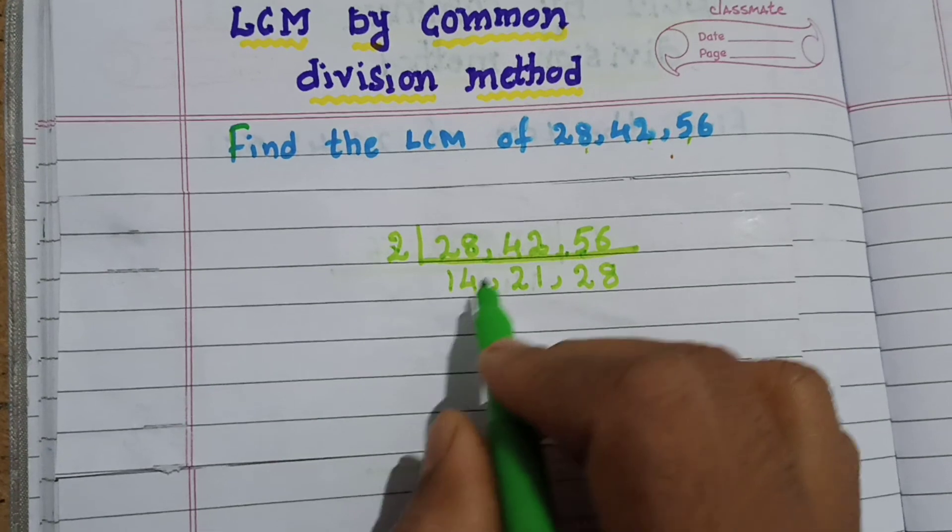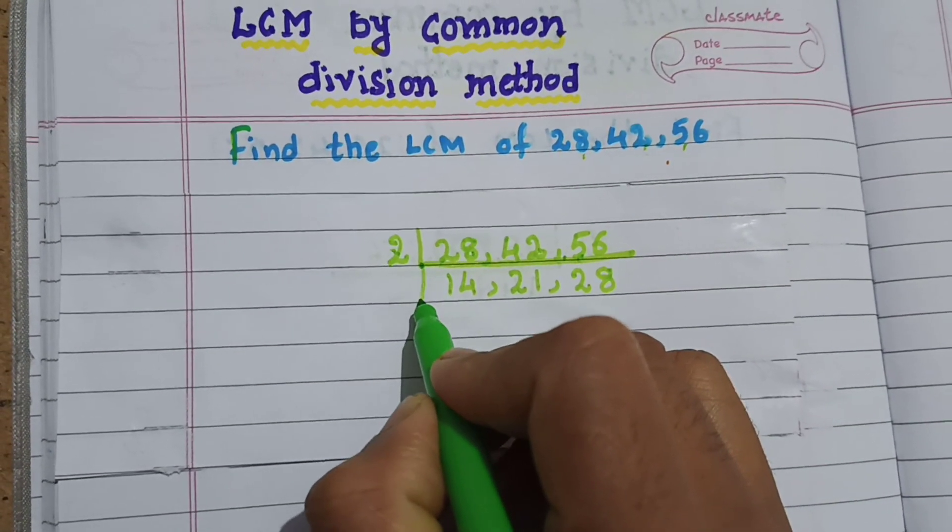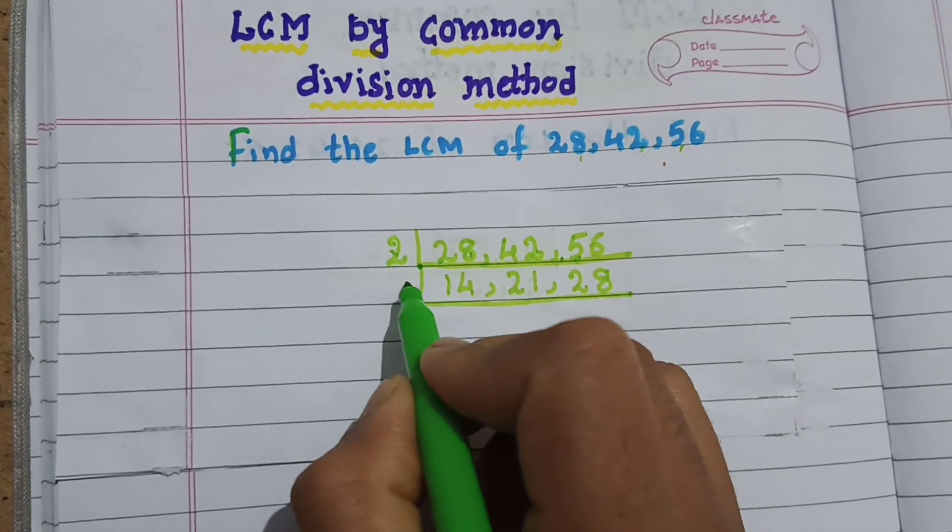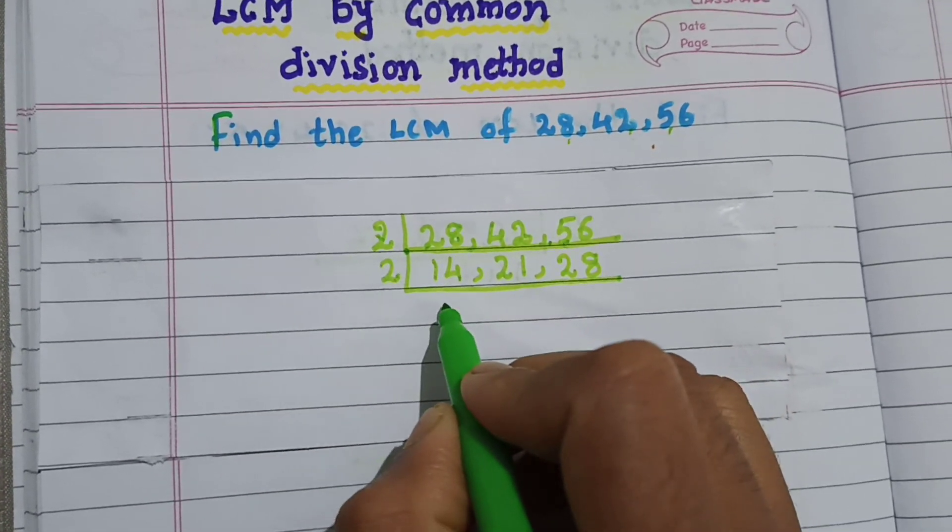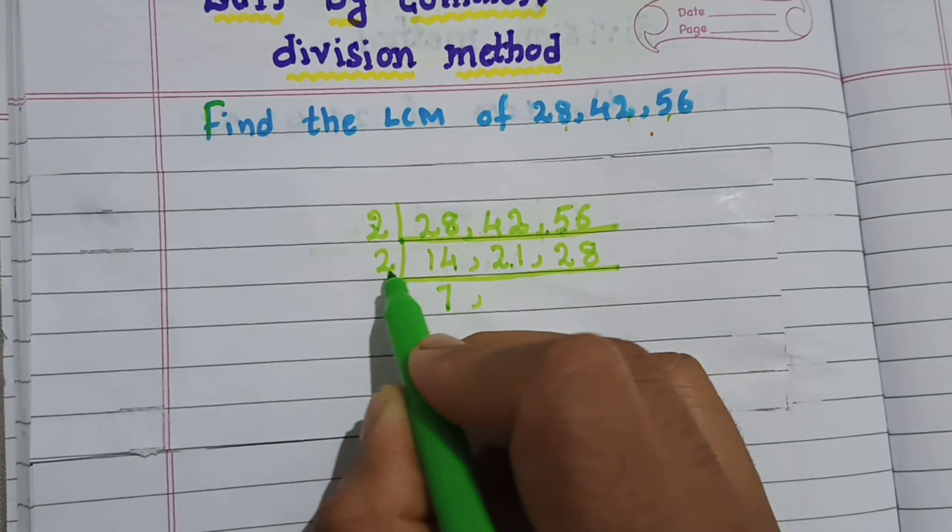Now, again divide these numbers by the least possible prime number, that is 2. Divide 14 by 2, gives me 7. 21 does not divide by 2.